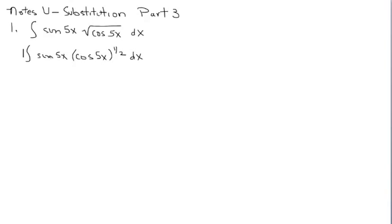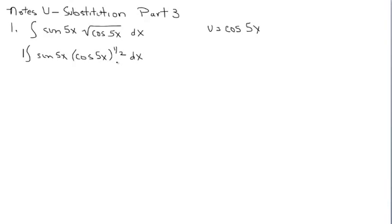Remember, we're looking for what do we differentiate to get this expression. I see some exponents, which makes me think reverse power rule. But I also see trig functions, so I think about trig derivatives. The product sine times cosine to the 1/2 is not a derivative of one of the six trig functions, so I have to linger a little longer. If I look at the power function 1/2 and study the inside, if I let u be cosine(5x), is the derivative of cosine(5x) present here as another factor? It appears that it is.